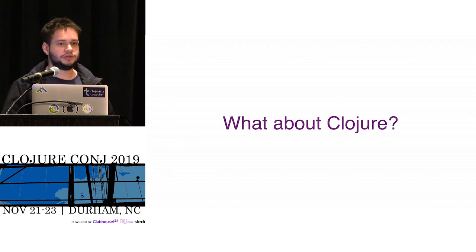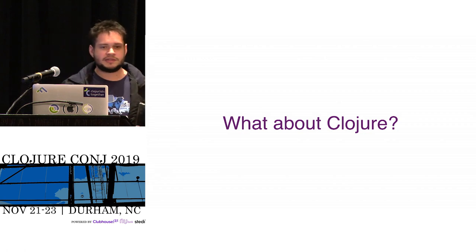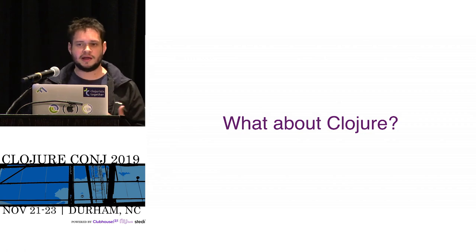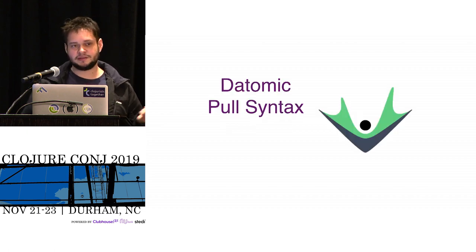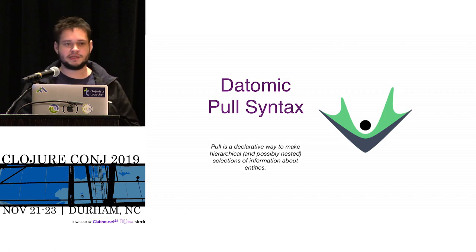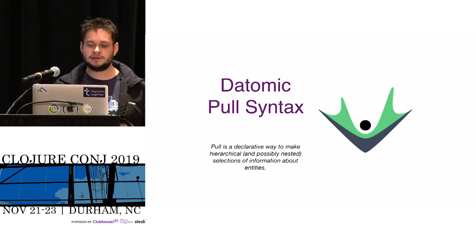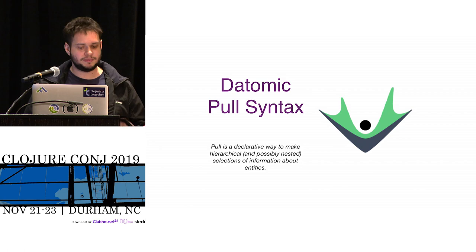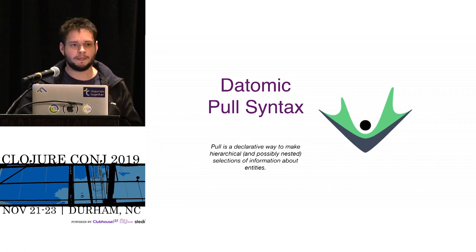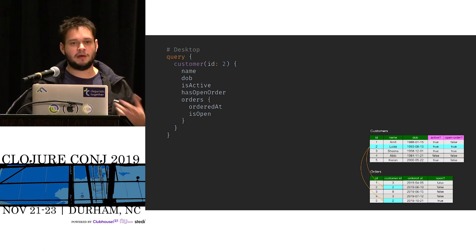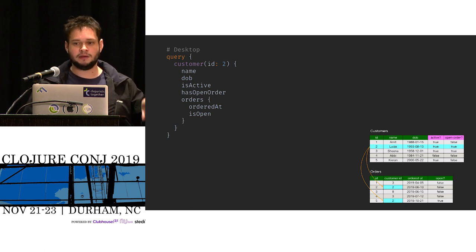So what about Clojure? Do you have something similar that can handle these kinds of things in Clojure? Back then, the Datomic pull syntax was a good candidate. The description says: pull syntax is a declarative way to make hierarchical and possibly nested selections on information entities. Sounds promising. So let's see how we could write a query in the same way we did GraphQL, but in Datomic pull syntax.